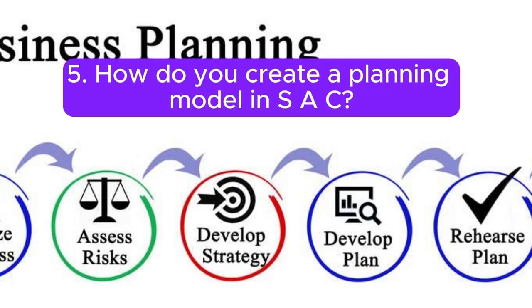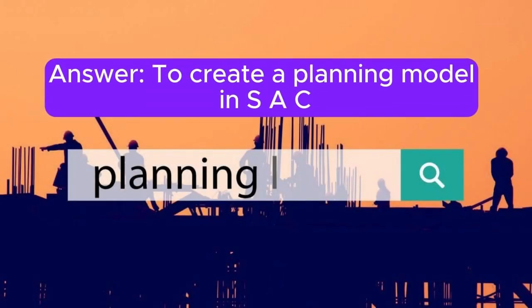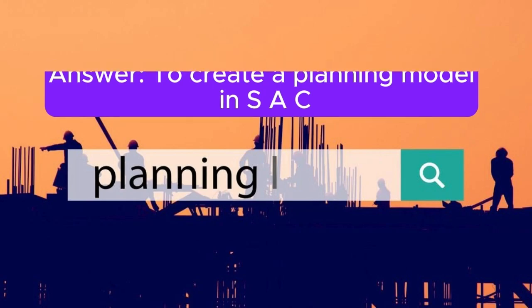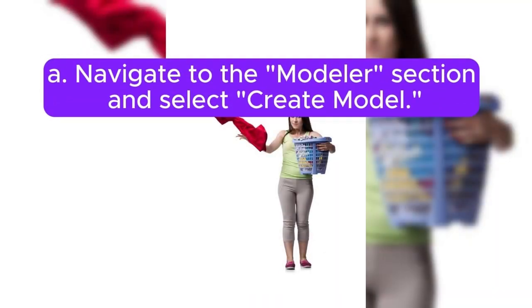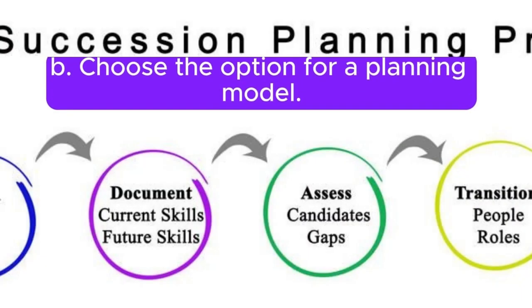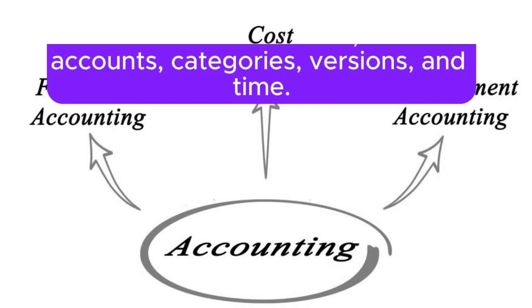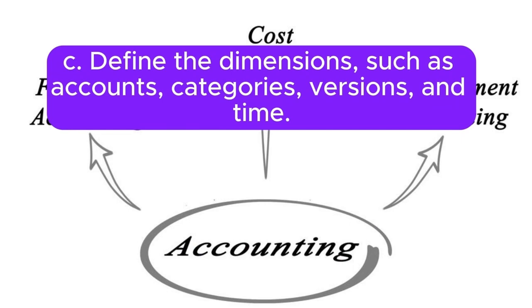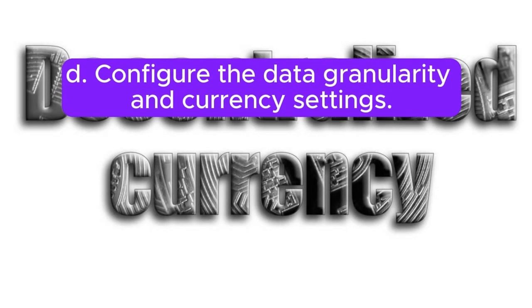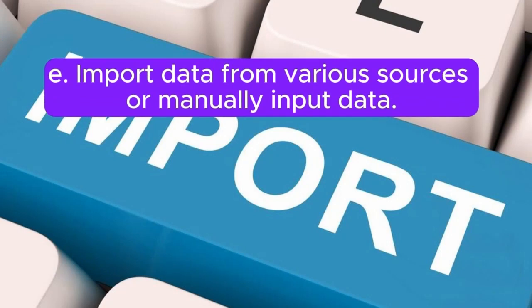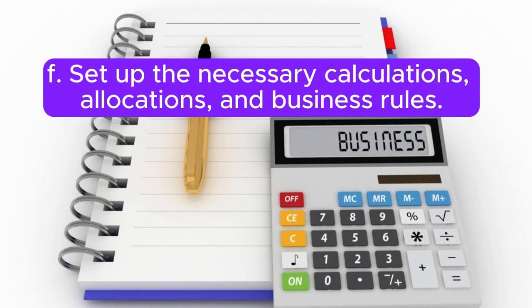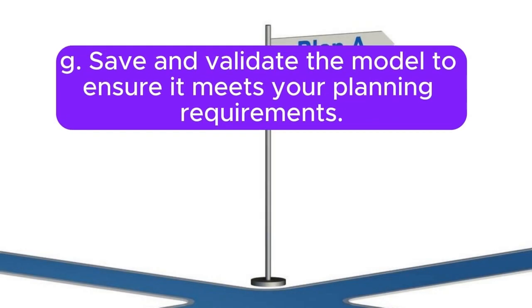Question 5: How do you create a planning model in SAC? Answer: To create a planning model in SAC: A. Navigate to the modeler section and select Create Model. B. Choose the option for a planning model. C. Define the dimensions such as accounts, categories, versions, and time. D. Configure the data granularity and currency settings. E. Import data from various sources or manually input data. F. Set up the necessary calculations, allocations, and business rules. G. Save and validate the model to ensure it meets your planning requirements.